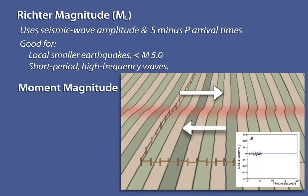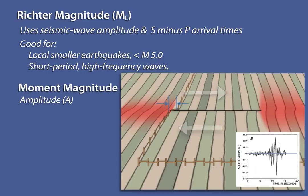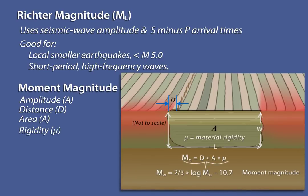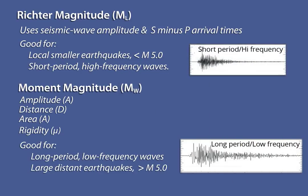The moment magnitude is based on the lowest frequency data recorded on modern seismometers, and can be related to the distance the fault moved, the area of the moving fault, and the rigidity or strength of the rocks on both sides of the fault. It thus measures the size of an earthquake in terms of the total energy it released. The larger the earthquake, the more energy is released at lower frequencies that are associated with damaging surface waves. The moment magnitude scale works well for large, long-period, low-frequency, distant earthquakes. This is the most common measure for earthquakes greater than magnitude 5.